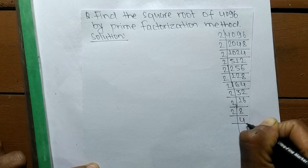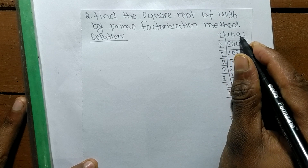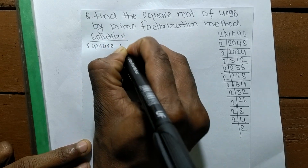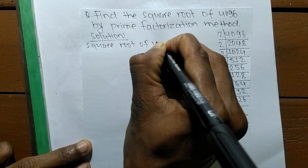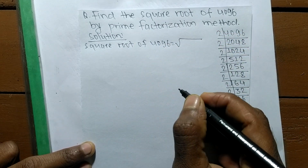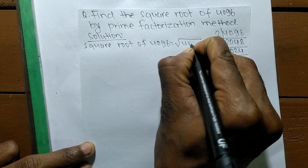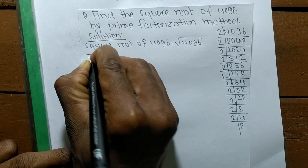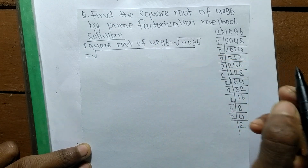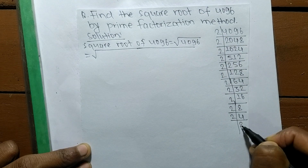We have taken out the prime factors of 4096. Now we find the square root of 4096. This sign is the sign of square root, and we are finding the square root of 4096. It is equal to — now we write all the prime factors of 4096, which is 2 multiplied 12 times.